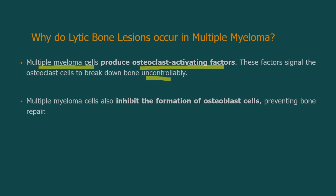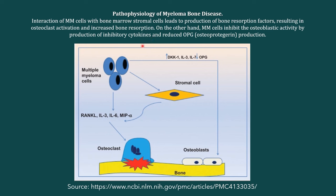Multiple myeloma cells also inhibit the formation of osteoblasts, the bone-forming cells, thereby preventing bone repair. So there is a lot of bone breakdown but not enough bone repair, and this leads to the formation of lytic lesions in the bone. This image from an NCBI article will help you understand the molecular concept much better — I have included the link below.